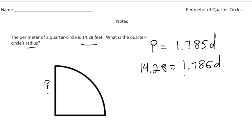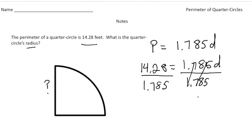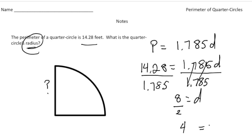Now that we have an equation, we can solve for D. I divide both sides by 1.785, giving me a diameter of 8. I got 8 by doing 14.28 divided by 1.785. But the question asks for the radius, so I take the diameter and cut it in half: 8 divided by 2 is 4. So the radius equals 4 feet.